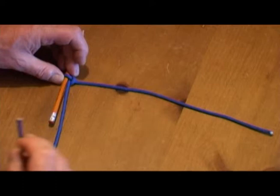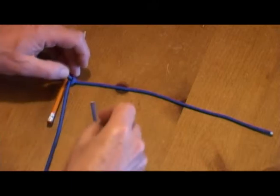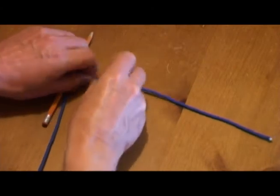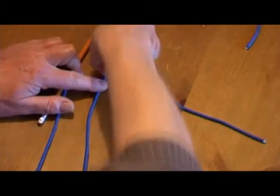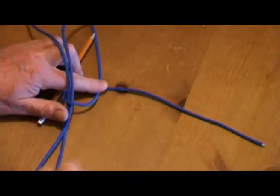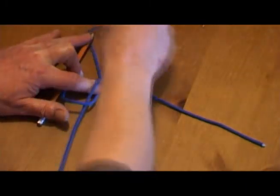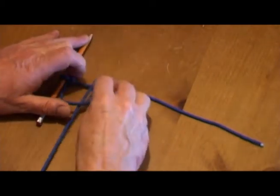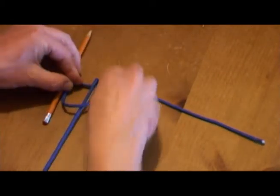So when the working end is pointing upwards, we do the next half hitch by going round the back first. You'll see what I mean when we start up again. Take the working end round the back and through the loop to tie the half hitch, and then a bit of fiddling to tighten it up.